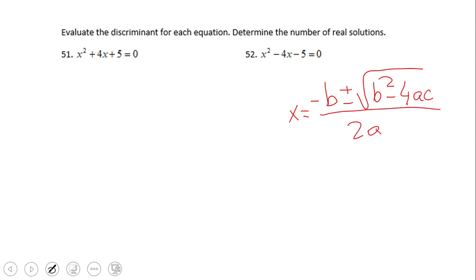This one is the quadratic formula, the famous quadratic formula, x equals negative b plus or minus square root of b squared minus 4ac over 2a. The discriminant is the quantity under the square root, b squared minus 4ac.